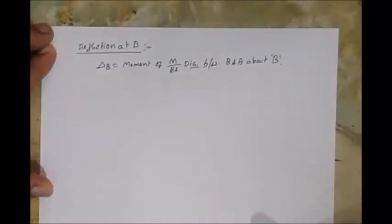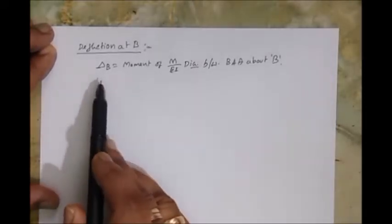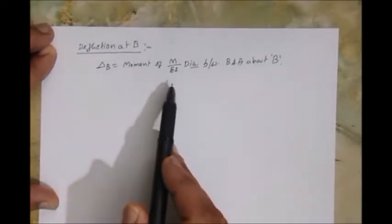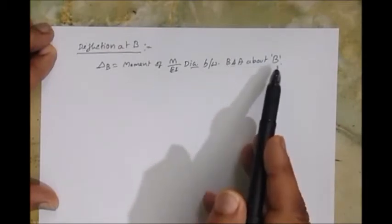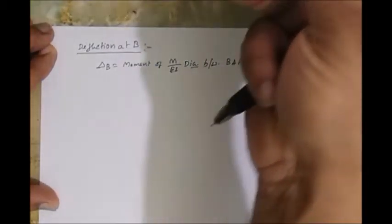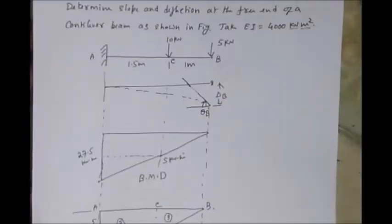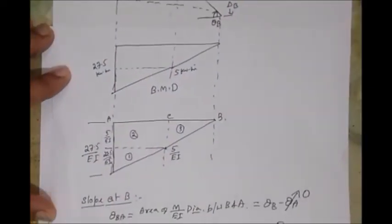Okay, let's find the deflection at the free end. As per the definition, delta B is equal to moment of a Mohr diagram between B and A about B. So what we need to do is find the moment of a Mohr diagram. Let me take the Mohr diagram.